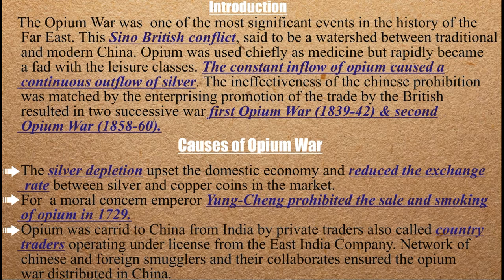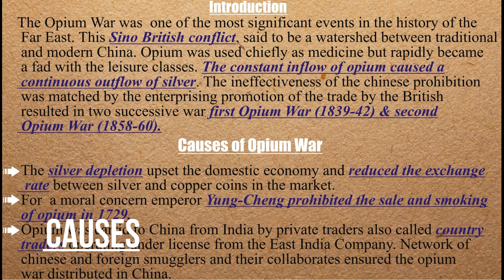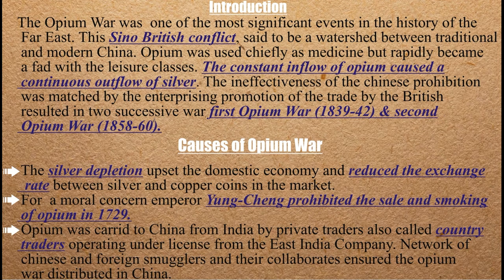That is why we have two wars — the First Opium War and the Second Opium War. One of the causes was that opium imports led to economic depression. Silver was flowing out of the country, and the exchange rate between silver and copper coins was also disrupted, causing serious economic damage.